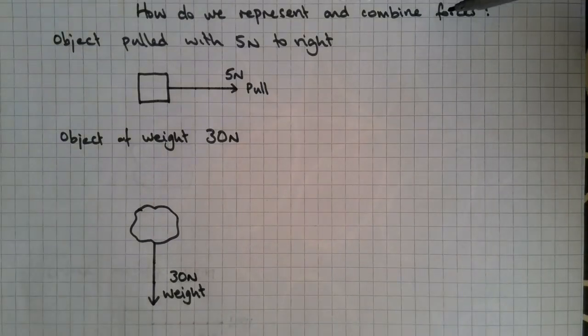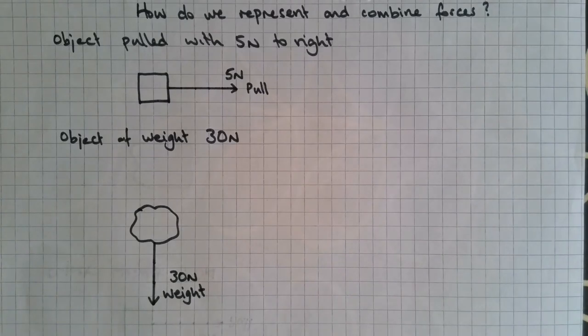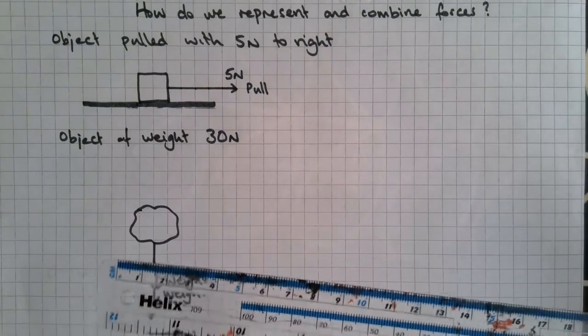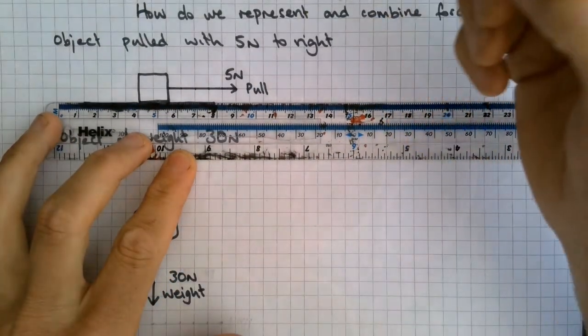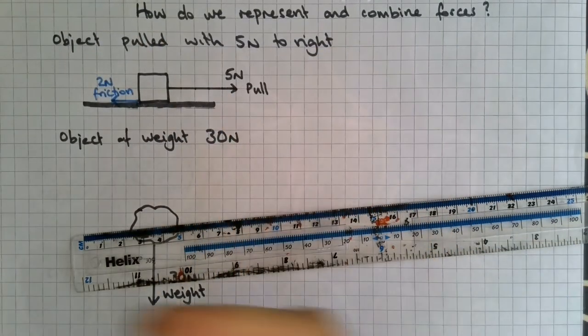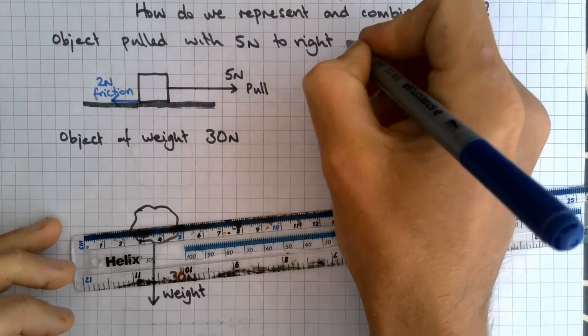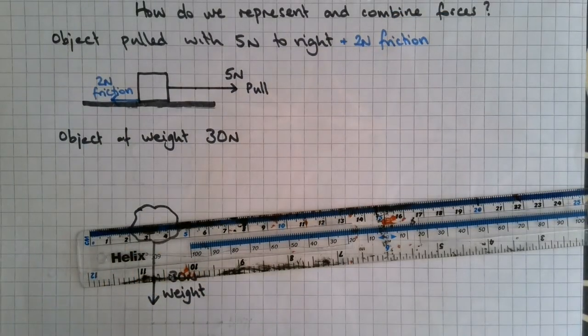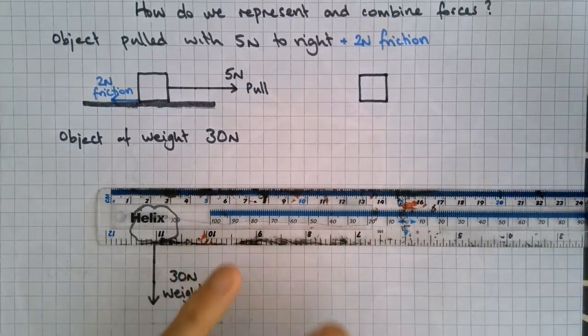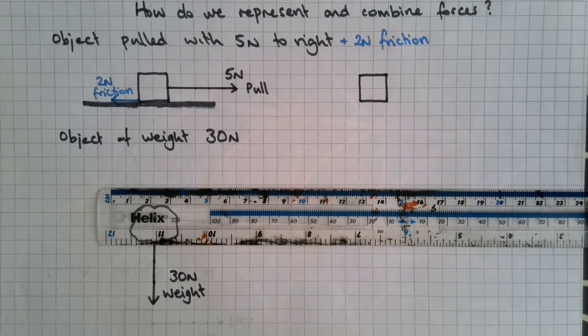If we come to this idea of combining forces, the diagrams really do come into their own, and it's important to use a scale. Let's say that this object here is on a desk and it's being pulled along the desk, so there is friction at that surface. I'm going to put a force of 2 newtons, using the same scale, 1 newton per square. I've got my 2 newtons of friction, and that's going to oppose the motion. So if it's being pulled in this direction, friction is going to go there. When we combine forces, what we're doing is representing two or more forces as a single force, and we call that the resultant force.